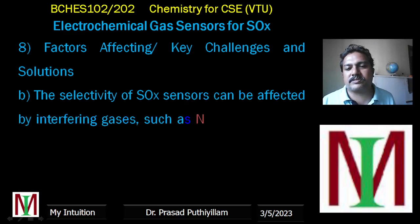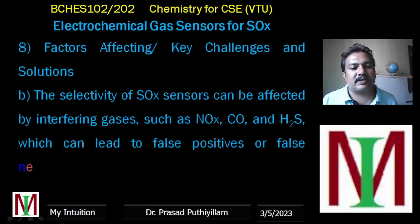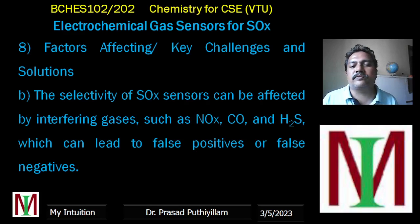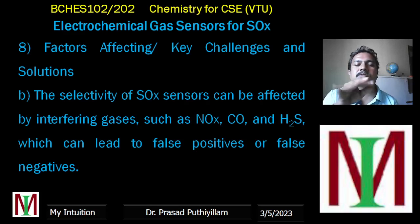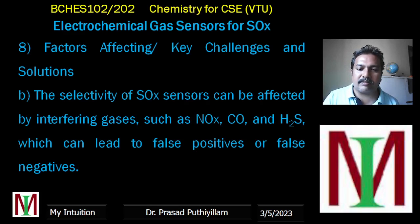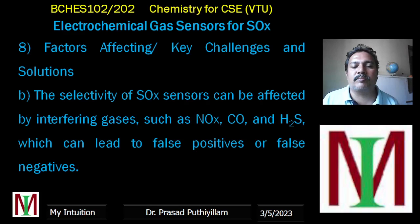The selectivity of the SOX sensor can be affected by interfering gases such as oxides of nitrogen, carbon monoxide, and hydrogen sulfide, which can lead to false positive or false negative results. If these gases are present, the sensor may react to them and report them as SOX, giving a result that is not based on the actual presence of SOX — which is confusing and unreliable.